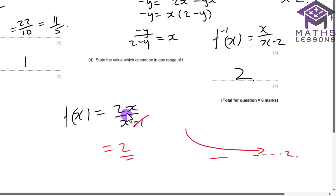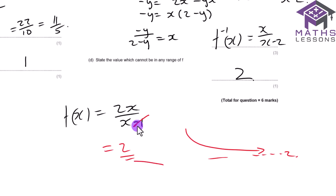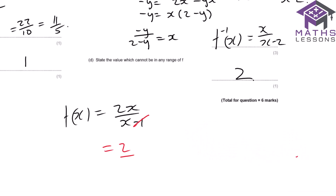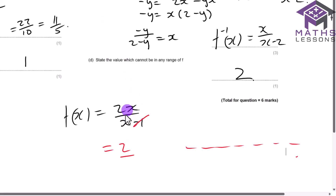The same applies as x becomes a very large negative number: 2×(−large)/(−large) still approaches 2. So from both directions, the function approaches but never reaches 2. This horizontal asymptote method gives us the excluded range value directly. There are two valid approaches to find the range of f — using the inverse or the horizontal asymptote.